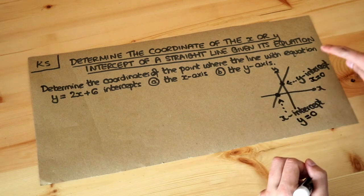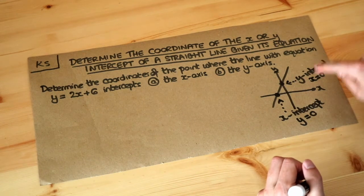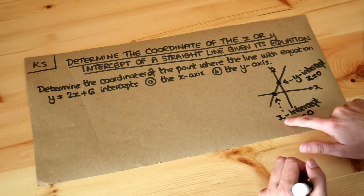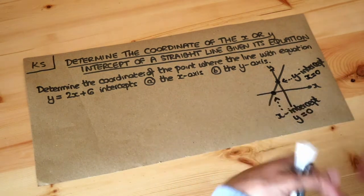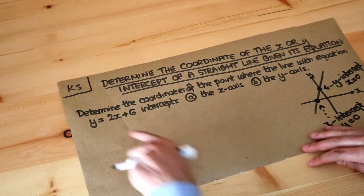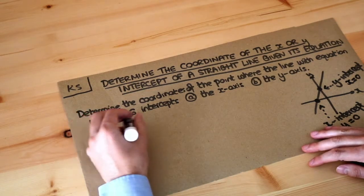So that's a bit confusing. When you want the y intercept you make x zero and when you want the x intercept you make y equal to zero. So let's try that for this equation here. We've got y equals 2x plus 6.